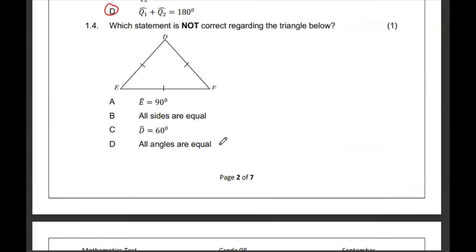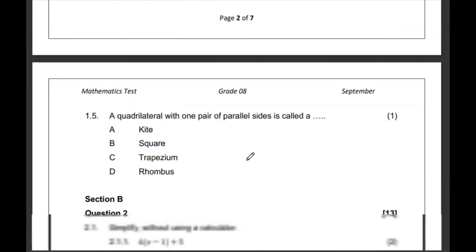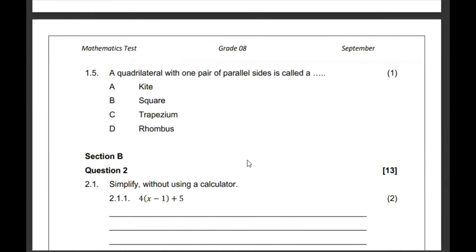1.4, which statement is not correct regarding the triangle below? So, this is an equilateral triangle. All sides are equal and all angles need to be 60. E is 90, nope. All sides are equal, yes. D is 60, yes. All angles are equal. Which one is not? Which is A.